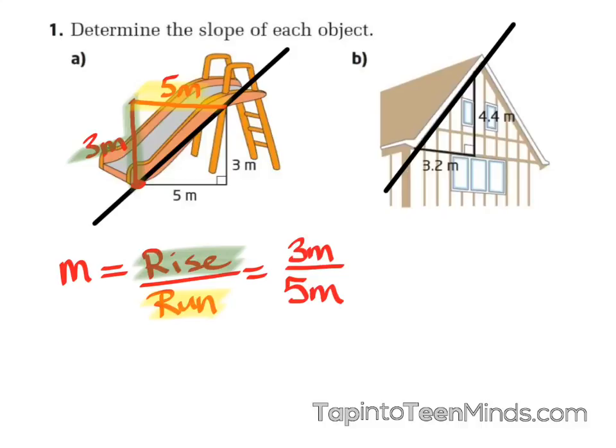You can keep your slope in a ratio or fraction, or you can convert to a decimal. Since three out of five is the same as six out of ten, I know that my slope would be 0.6.